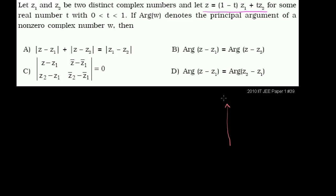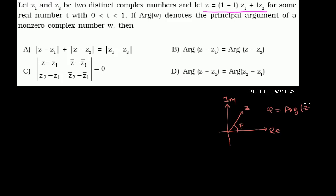Let me draw that. On an Argand diagram, this is the imaginary axis and this is the real axis. If this is our complex number z, its argument — the argument of z — is this angle right over here. So phi equals the argument of z. That's all they're telling us in this second part.